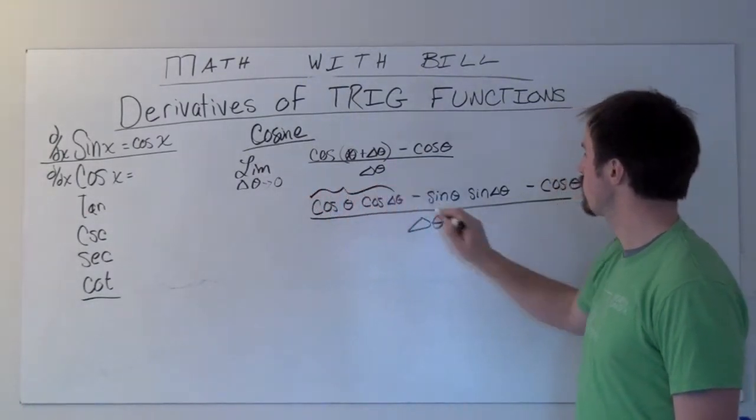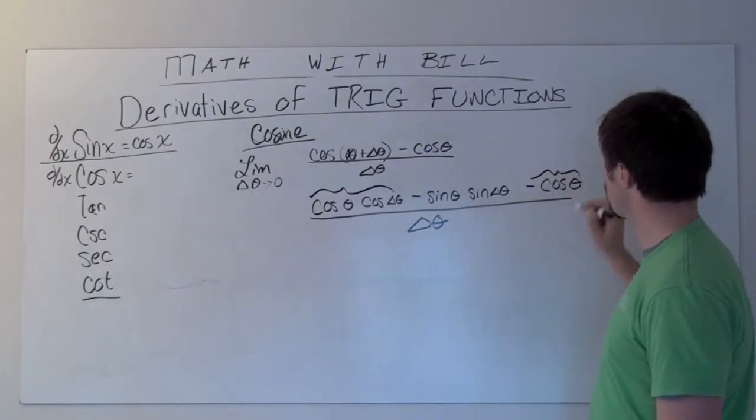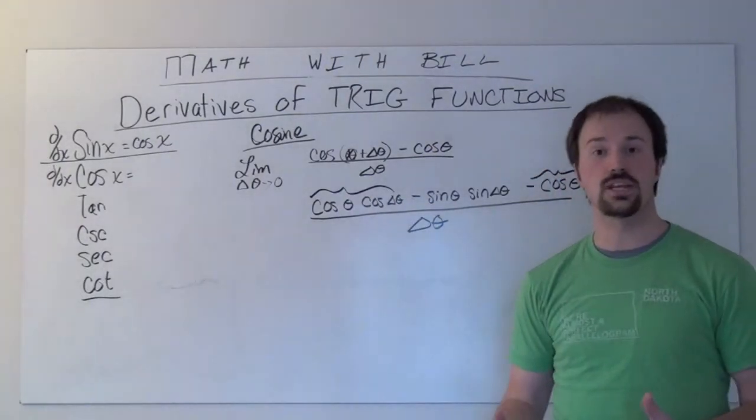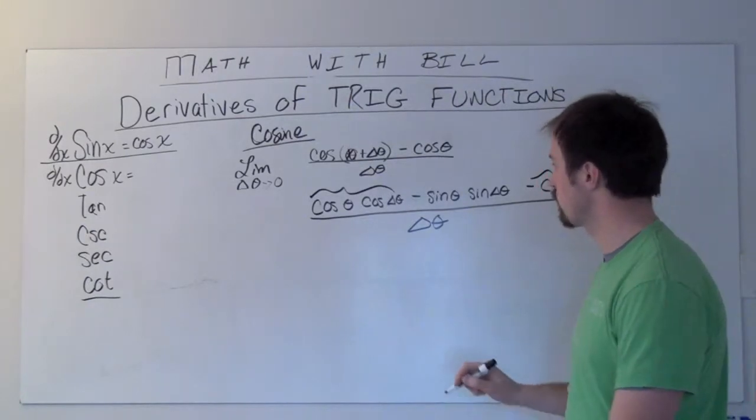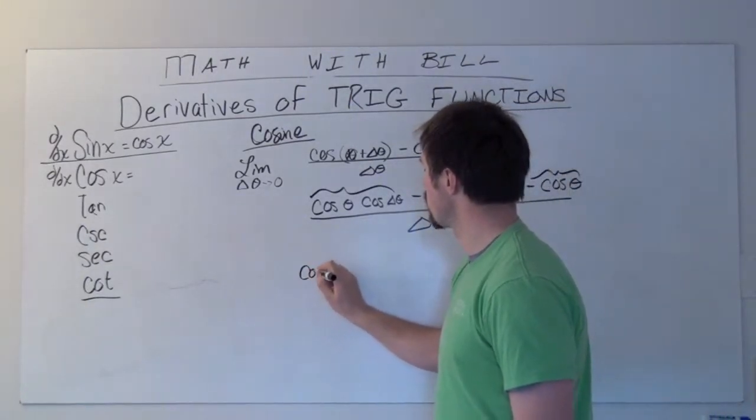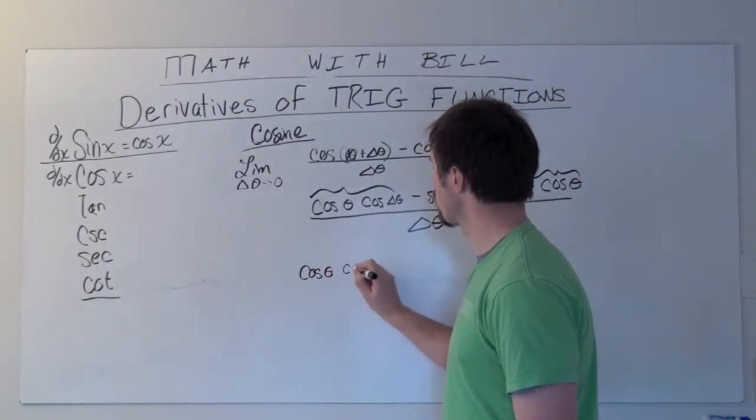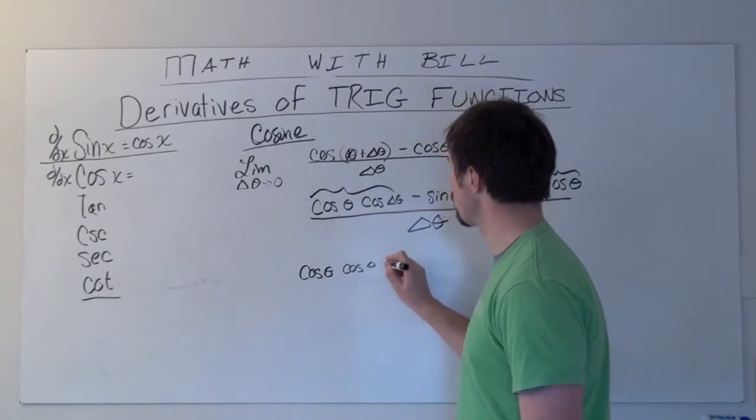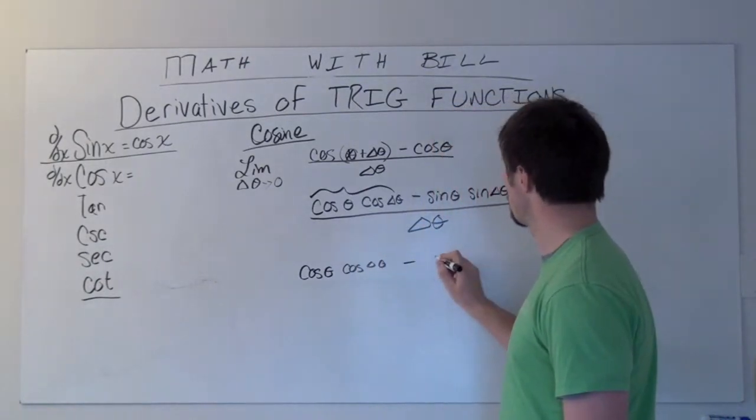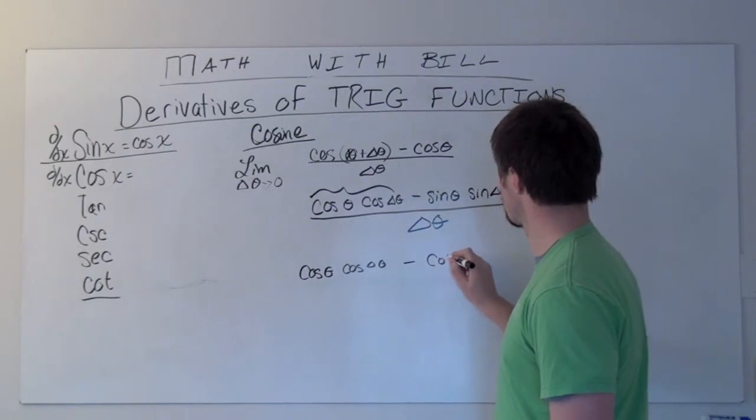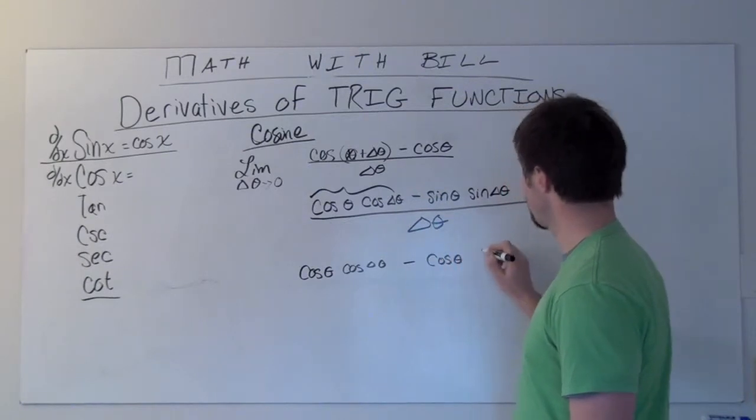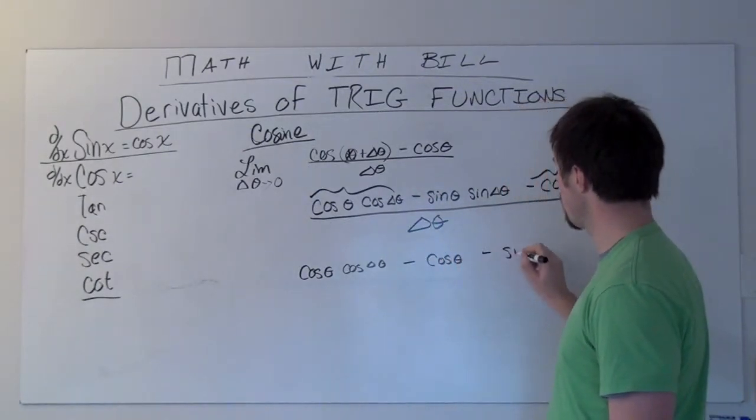I'm going to gather those together so that I can easily factor. I'm going to have cosine of theta times cosine delta theta minus cosine theta, minus sine theta times sine delta theta.